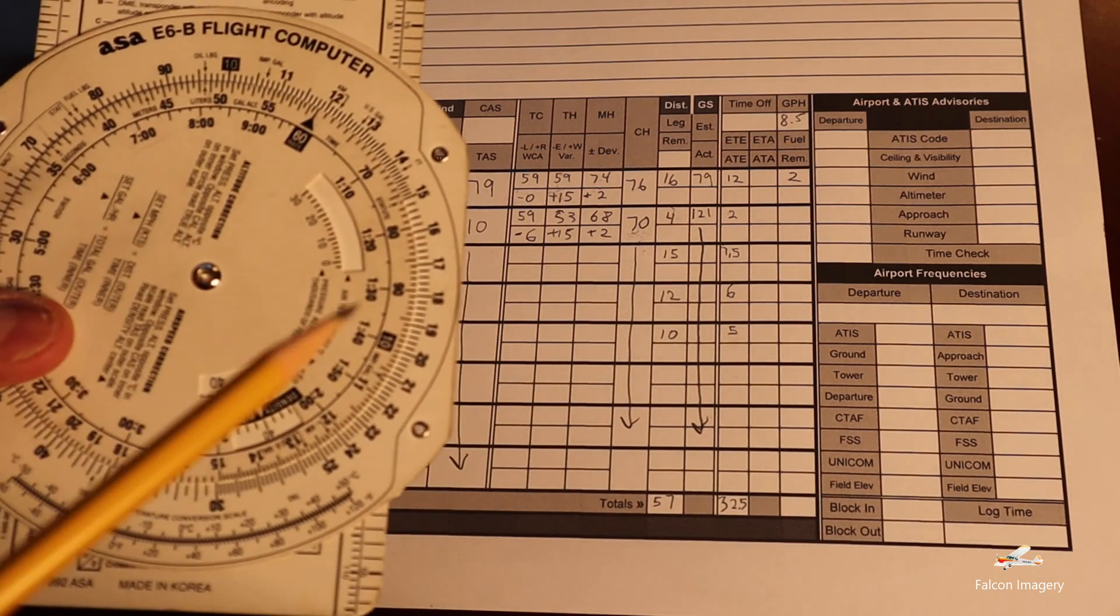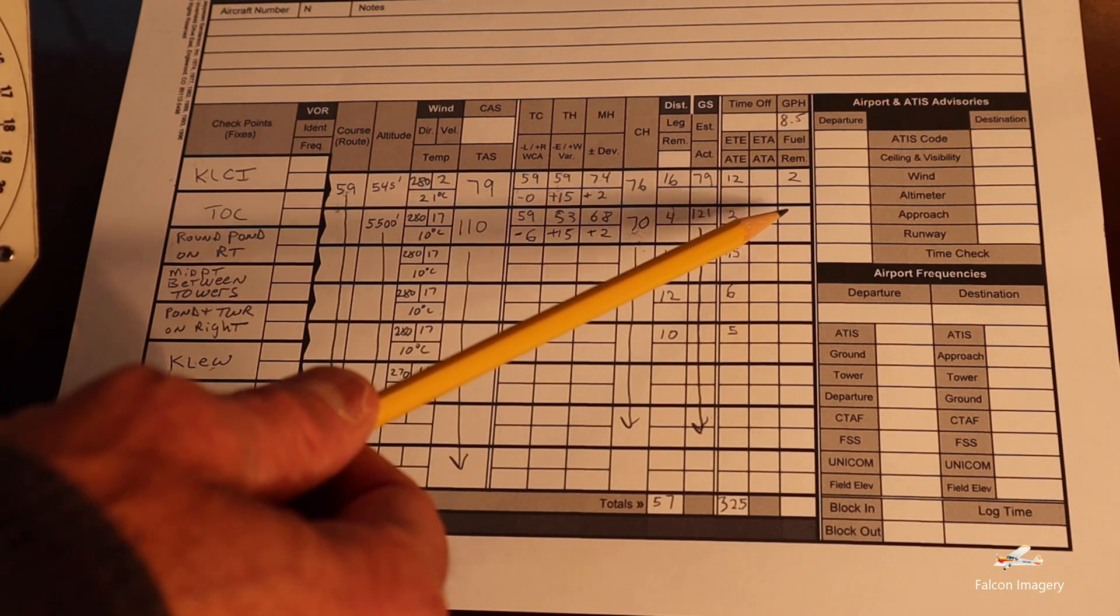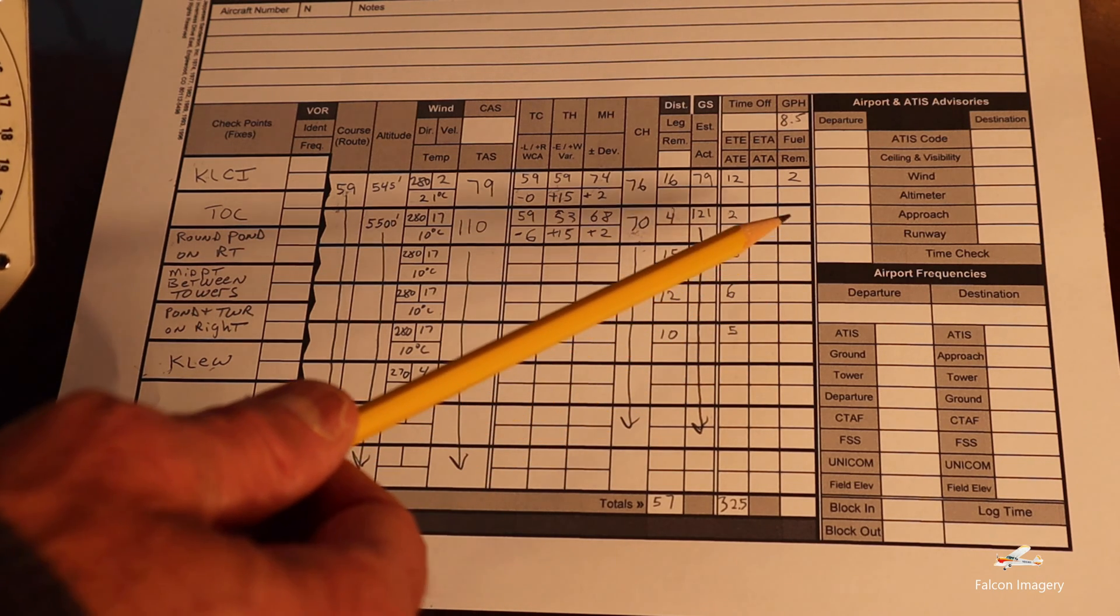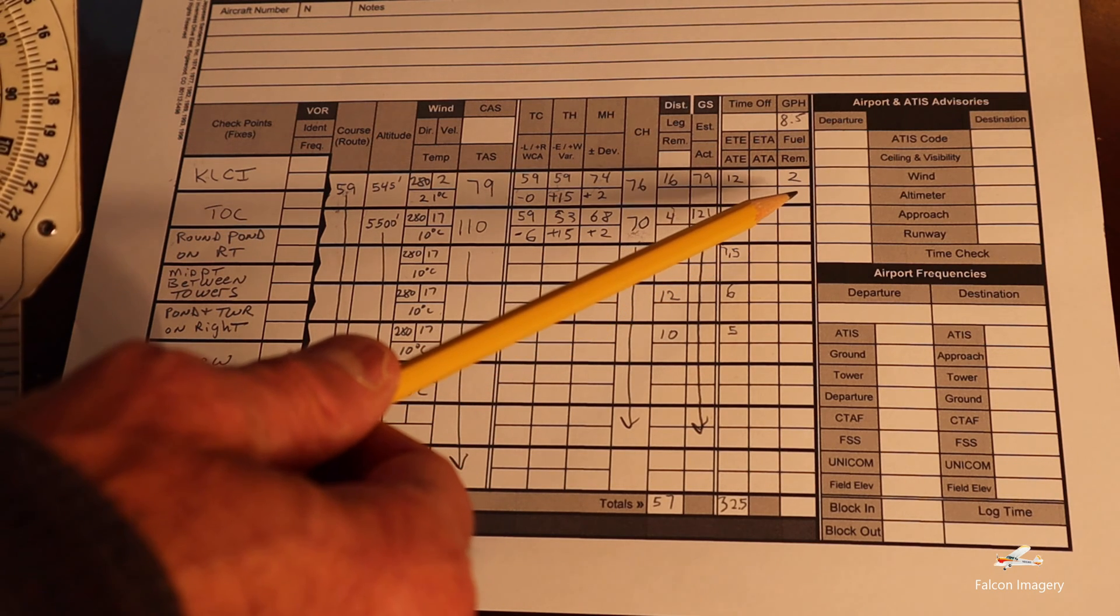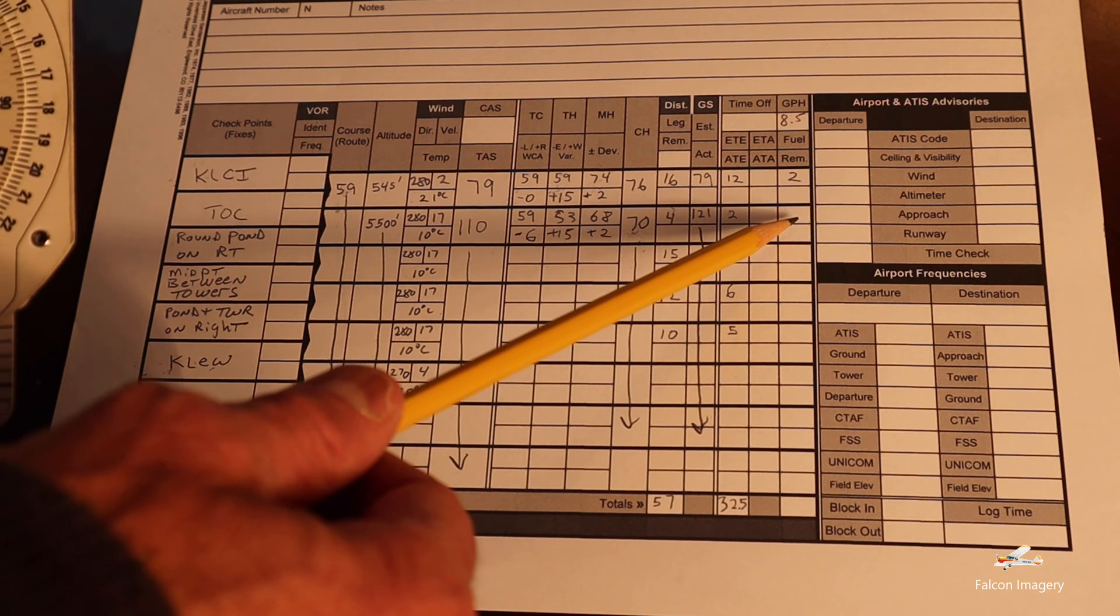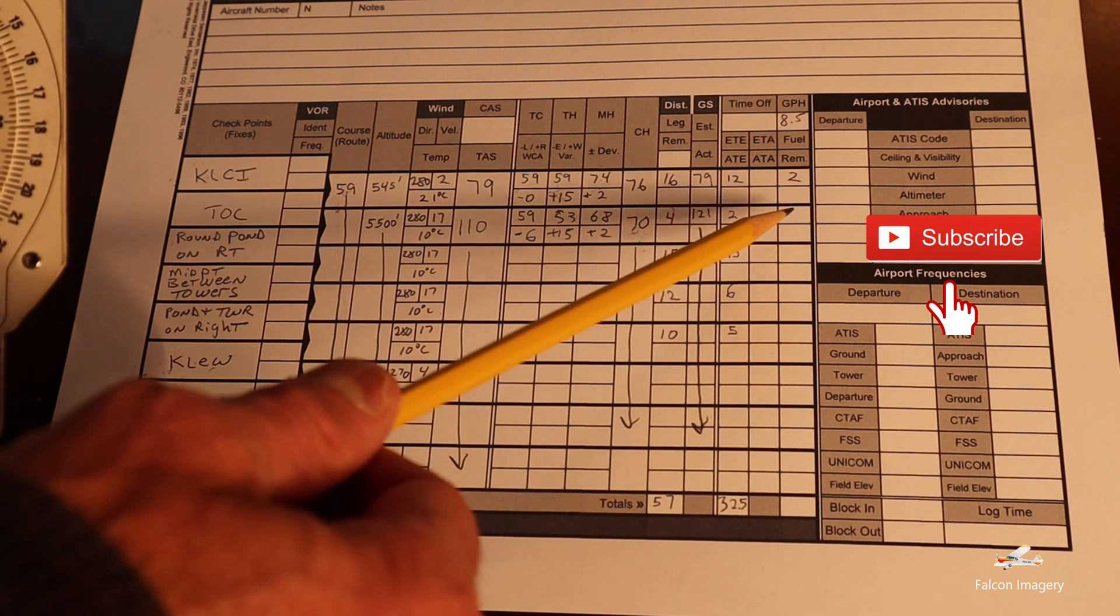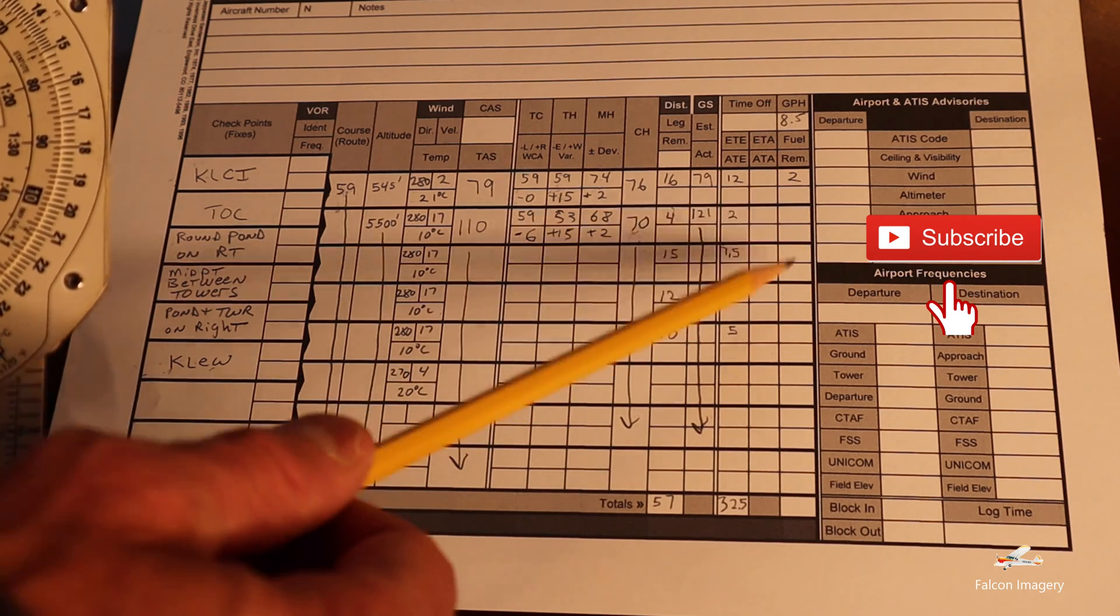So the E6B whiz wheel can be used to determine the gallons of fuel you're going to burn between legs along your cross-country flight. You can use the E6B whiz wheel to put in your gallons per hour burn rate, and then looking at your gallons per hour burn rate relative to the minutes that you're flying, you can determine the specific amount of gallons that you're going to burn between the legs. Let me show you how to do that.